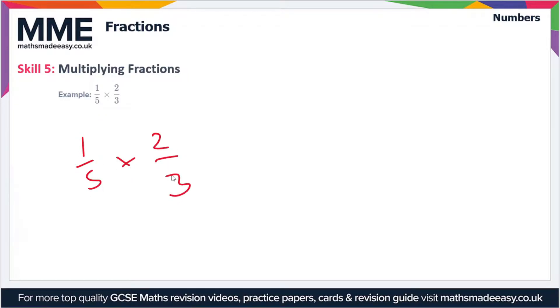In this example we have one-fifth times two-thirds. When we multiply fractions together, this is possibly one of the easiest skills because all we do is multiply the numerators together and we multiply the denominators together.